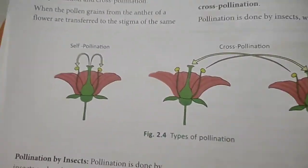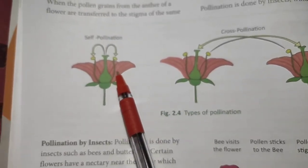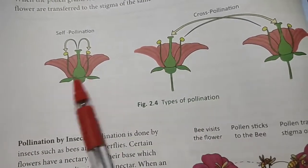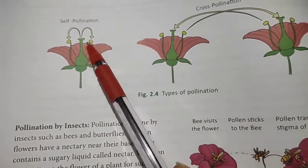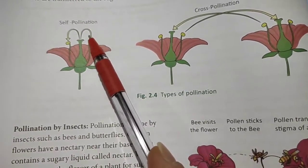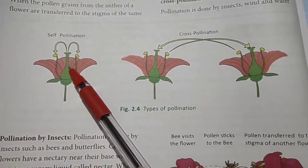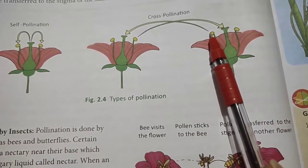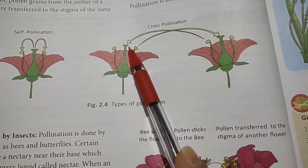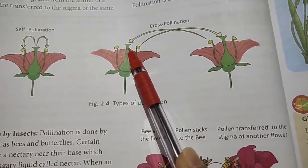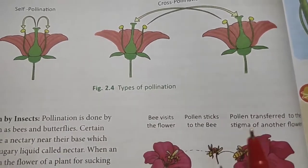Next we will study pollination. What is pollination? The transfer of pollen grains from the anther of a stamen to the stigma of a pistil is called pollination. There are two types of pollination: self-pollination and cross-pollination. Self-pollination is when pollen grains from the anther of a flower are transferred to the stigma of the same flower or another flower on the same plant. Cross-pollination is when pollen grains from the anther of a flower on one plant are transferred to the stigma of a flower on another similar plant.